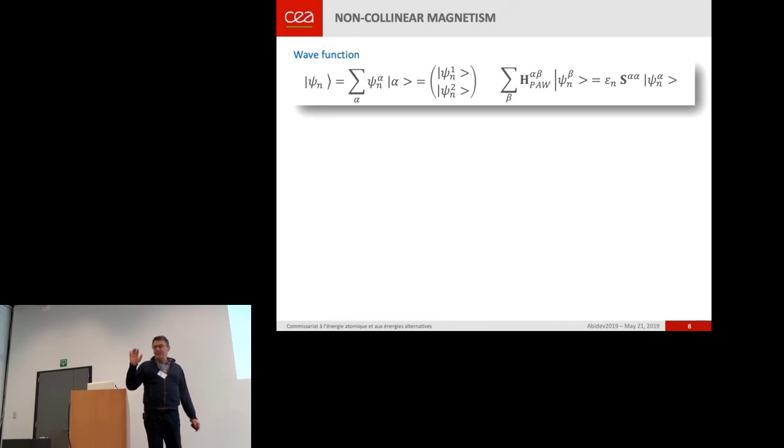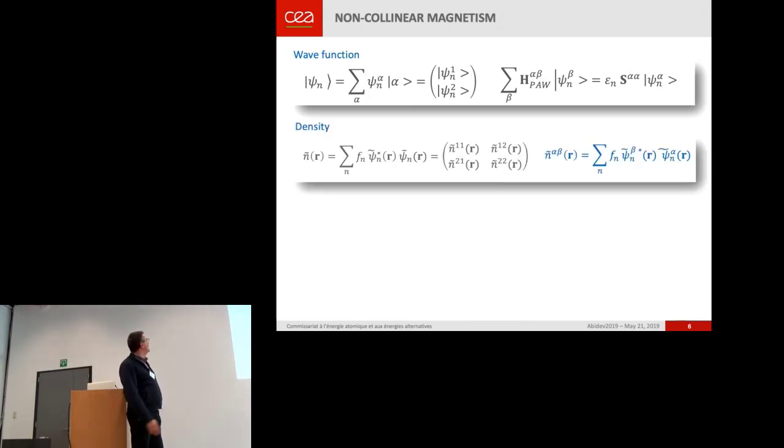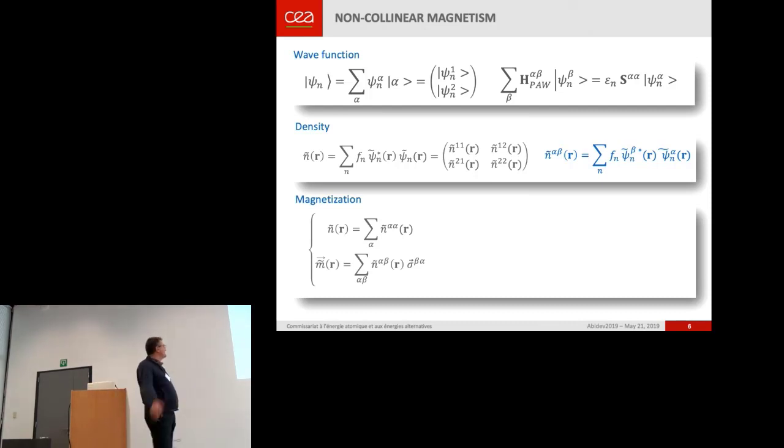So now we go to non-collinear magnetism. So it has been shown by Eric, so I can go directly to the end of the slide. You have a two-by-two matrix for the density and so on.